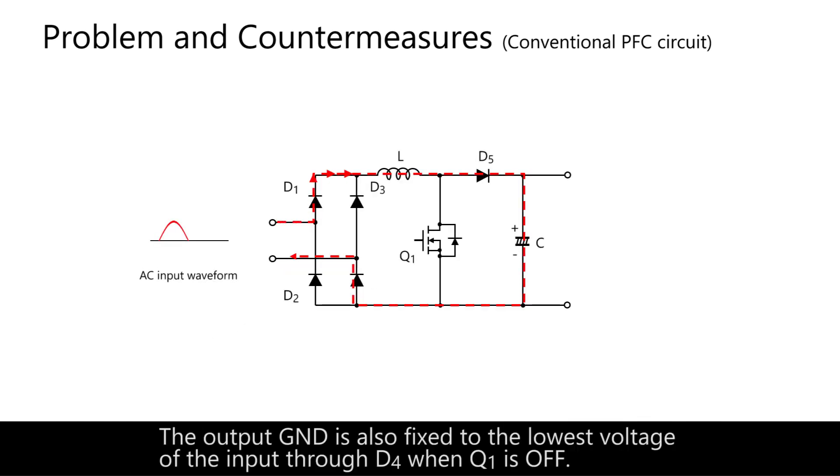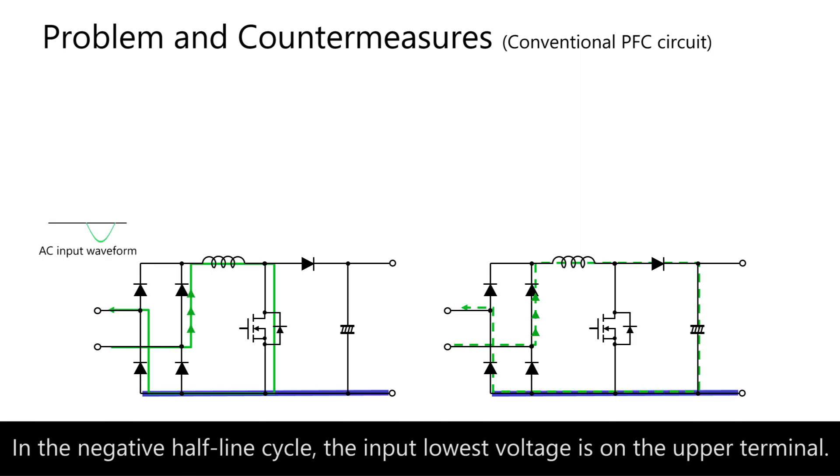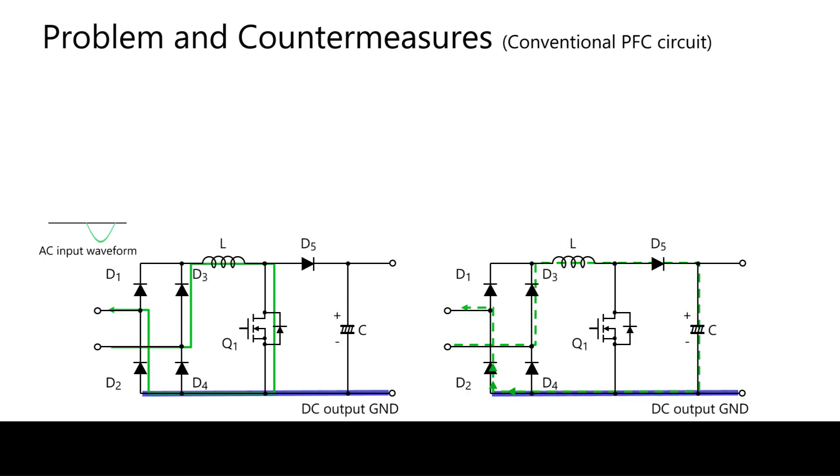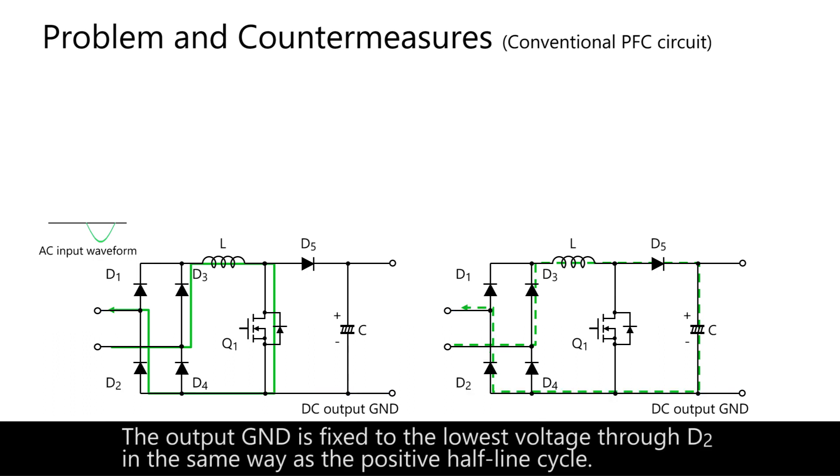The output ground is also fixed to the lowest voltage of the input through D4 when Q1 is off. In the negative half-line cycle, the input lowest voltage is on the upper terminal. The output ground is fixed to the lowest voltage through D2 in the same way as the positive half-line cycle.